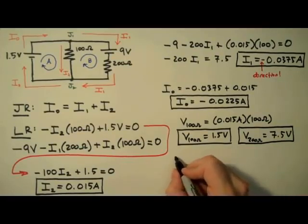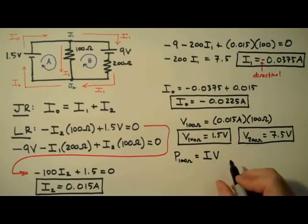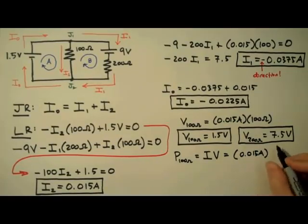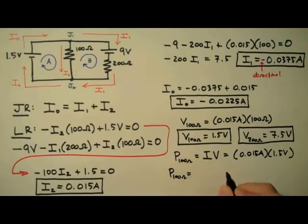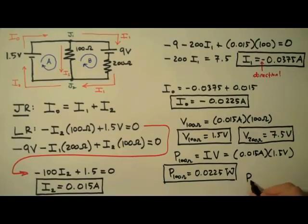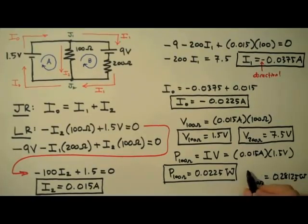To determine the power dissipated by these resistors, we simply multiply the current through by the voltage across — IV. For the 100 ohm resistor, using 15 milliamps and 1.5 volts, the power dissipated is 0.0225 watts, or 22.5 milliwatts. For the 200 ohm resistor, multiplying the current times the voltage yields 281.25 milliwatts.